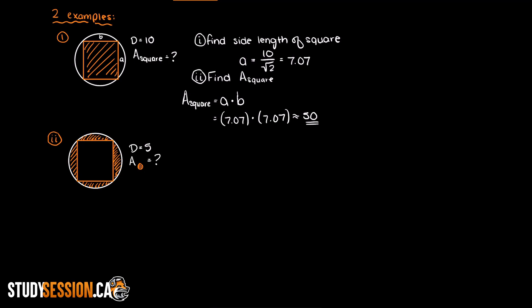So to find this we take the area of our circle minus the area of our square. So, just like before, we find the side length of our square, which is 5 over root 2, which is equal to 3.54. Then we need the area of both shapes.